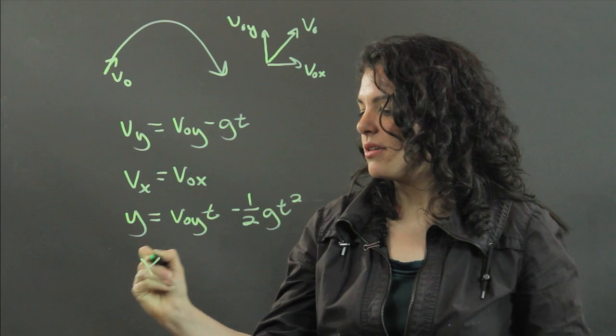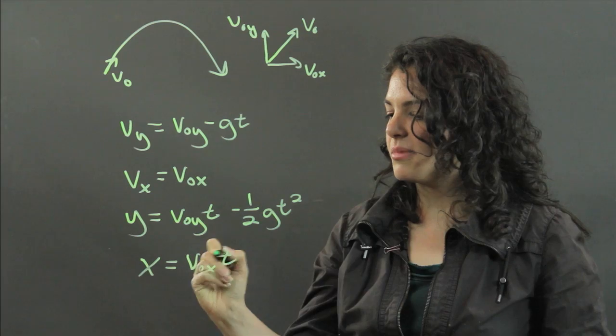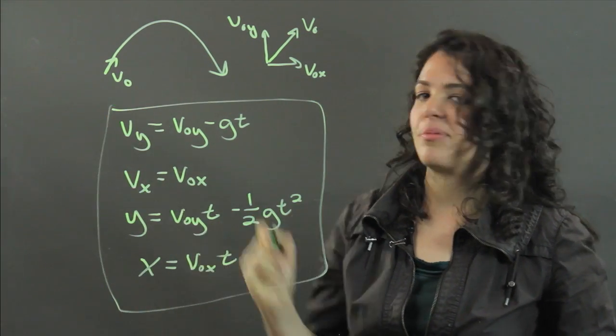And to find x, you can simply use v0x times t. And there you have four equations to use in your projectile problem.